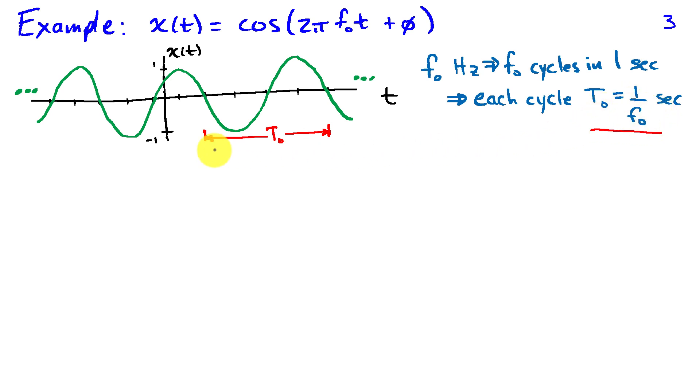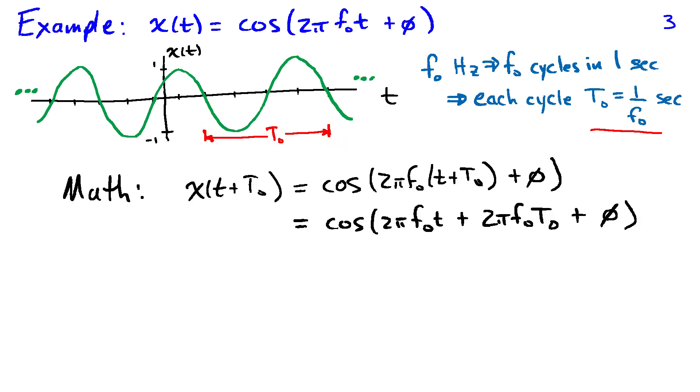So each cycle therefore is t zero equal 1 over f naught seconds. That's how long it takes for one cycle. I've sketched that on the graph. We can apply our mathematical definition by first computing x of t plus capital T zero.